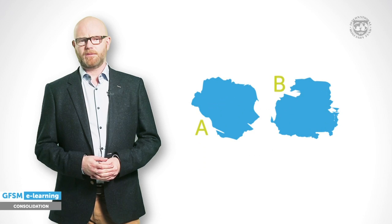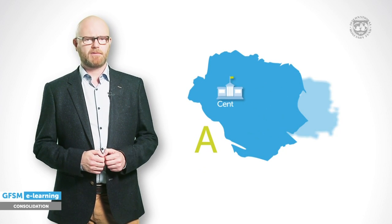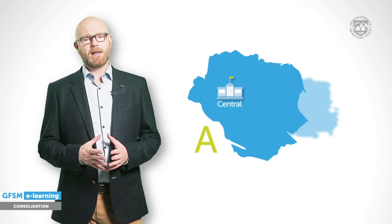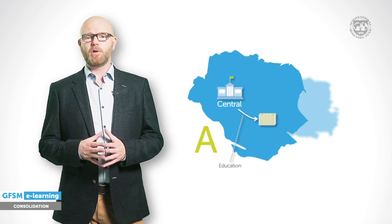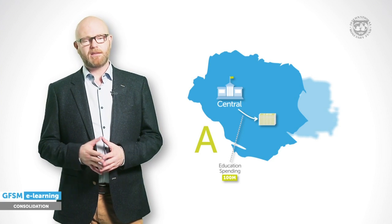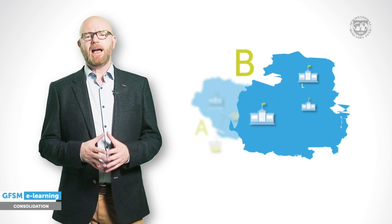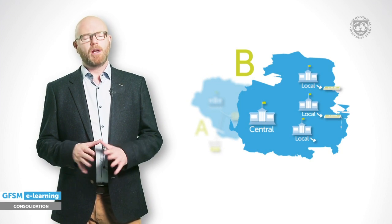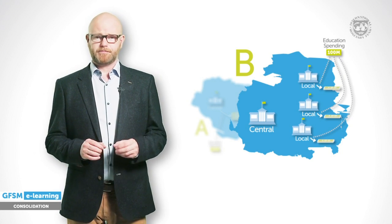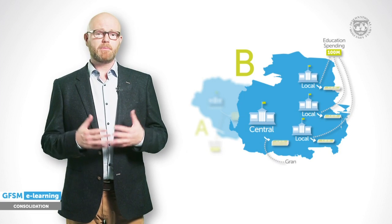Suppose we have two countries with different structures of government. Country A is quite centralised, where most of the spending occurs at the central level. For example, an education programme of 100 million is operated directly by the central government. In contrast, country B is more decentralised and the responsibility for education, again with a total value of 100 million, lies with the local governments, which are financed through grants received from the central government.